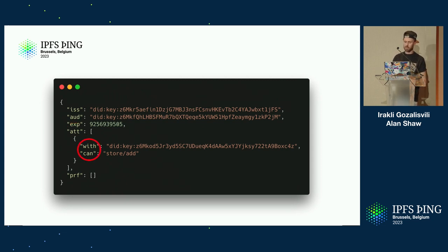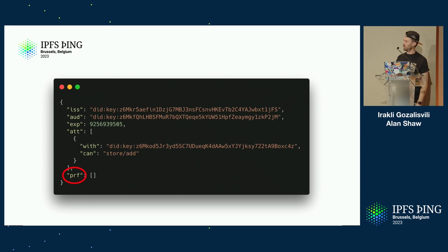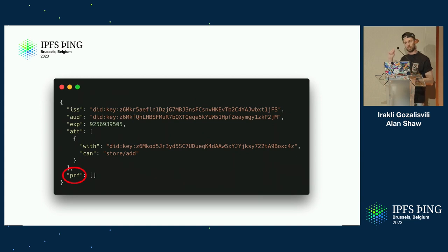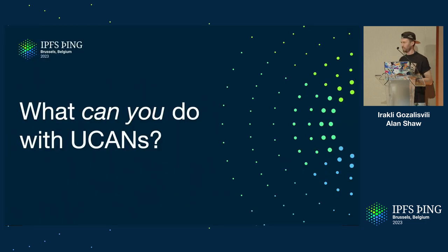In this particular case, the capability called store/add has been delegated, and the with field is the resource the delegated capability applies to. For example, in web3.storage in our new APIs, when we delegate store/add, the resource is typically a space — what we call a space, a place where you store things. The proof field is a list of nested UCANs that prove the issuer is able to delegate those capabilities to the audience. The whole thing is signed using the private key, so you can verify that it was sent by the issuer.